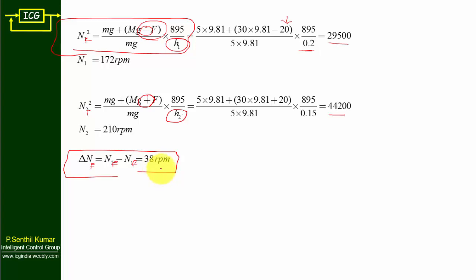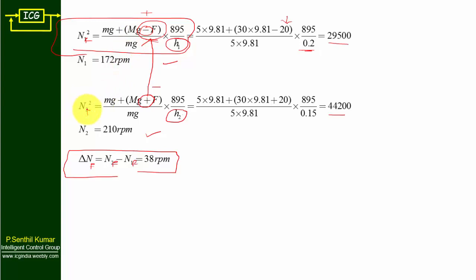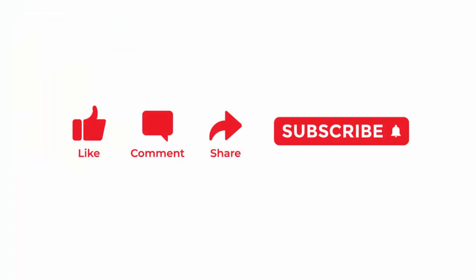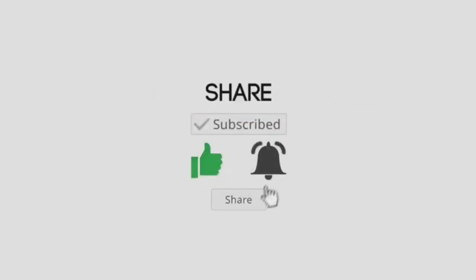One important note for exams: a common mistake is swapping the plus and minus signs. For n1 use minus (friction opposes, giving lower speed); for n2 use plus (friction adds, giving higher speed). If you swap them, n1 will appear as maximum and n2 as minimum, which is wrong. Remember: subtracting friction gives minimum speed, adding friction gives maximum speed. Post your questions in the comments, subscribe, and like the video.